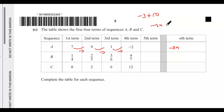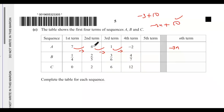So the nth term for sequence A is minus 3n plus 10. Let's verify: for n equals 2, minus 6 plus 10 equals 4; for n equals 3, minus 9 plus 10 equals 1. That's correct.